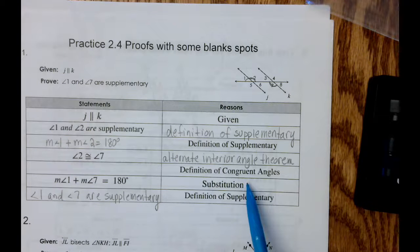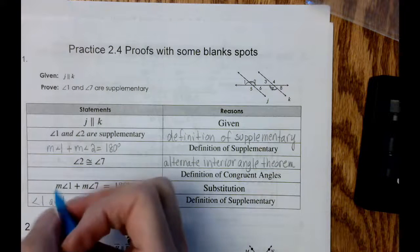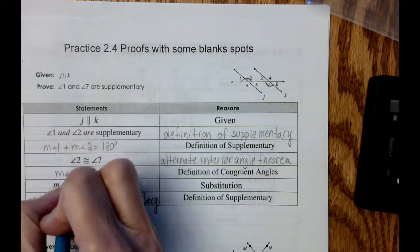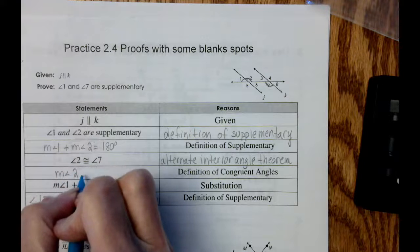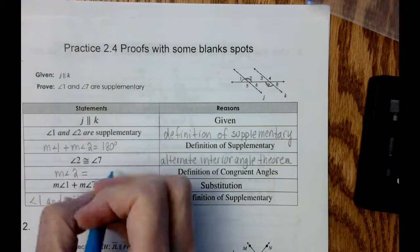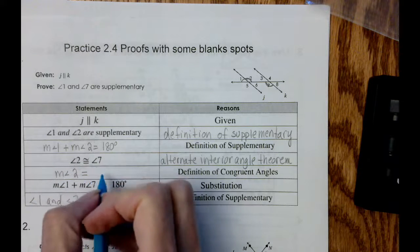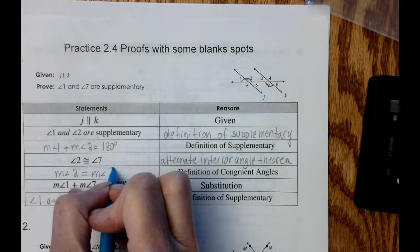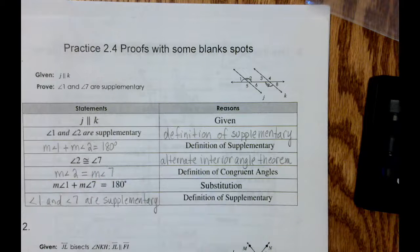The next reason is the definition of congruent angles, which allows us to say that the measure of angle two is equal to the measure of angle seven.